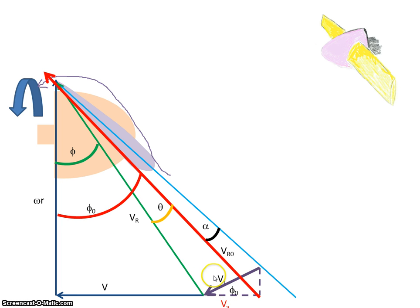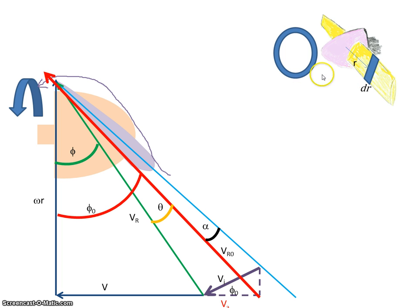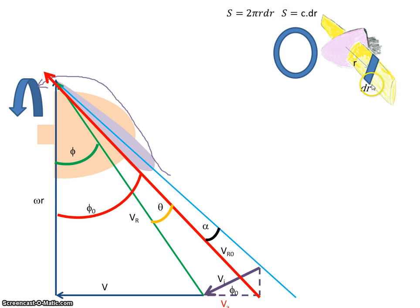If that's phi0 here, then this angle here is also phi0. This is our blade element, and as it rotates around the axis of rotation, it's going to map out an area of 2πr·dr. The area of this element is the chord length c multiplied by the width dr, the change in the radius of the propeller.